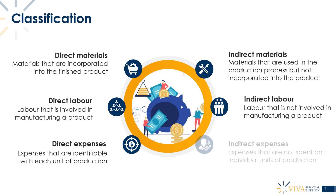An indirect expense is an expense that is not related to individual units of production. A good example is rent. The smartphone facility might have to pay rent each month, and that's not related to the number of units produced — it's completely independent. So rent is an indirect expense: something we have to spend, but not directly related to each unit of production.